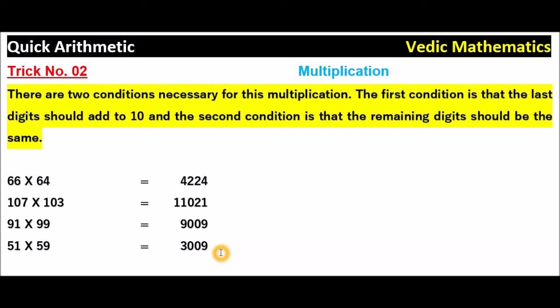You must remember, there are two conditions for this trick number 2 multiplication. The first one is the sum of the unit digits should be 10, and the other digits are same.